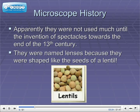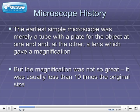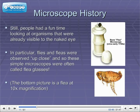They were named lenses because they were shaped like the seeds of a lentil. The earliest simple microscope was merely a tube with a plate for the object at one end, and at the other, a lens which gave a magnification. But the magnification was not so great — usually less than 10 times the original size, more like the dissecting microscopes we would see today. Still, people had a fun time looking at organisms that were already visible to the naked eye. In particular, flies and fleas were observed up close, and so these simple microscopes were often called flea glasses.